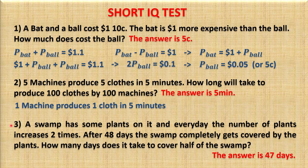Now the third question. This is actually the easiest because the answer is given by the question itself. Since every day the number of plants doubles and the swamp is fully covered after 48 days, we simply go back one day. So it takes 47 days to cover half the swamp.